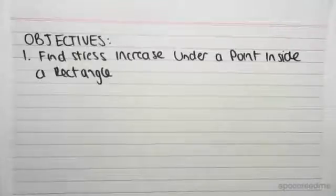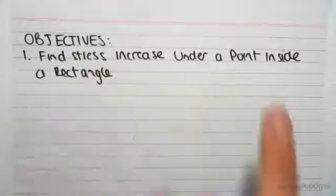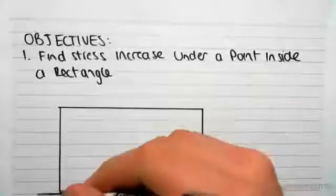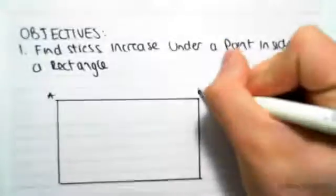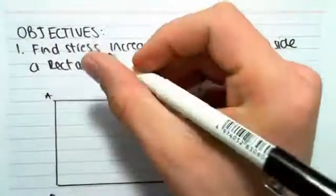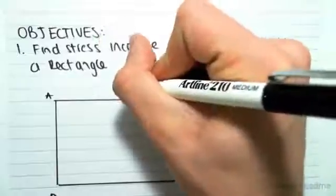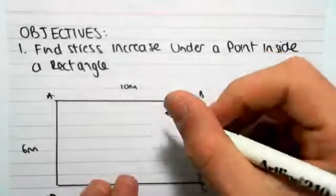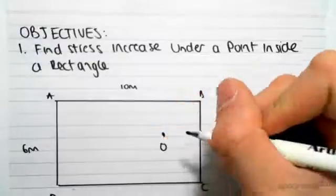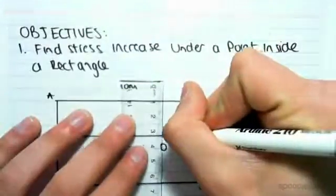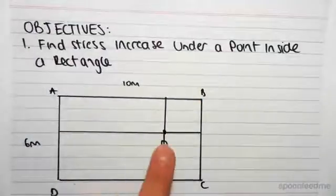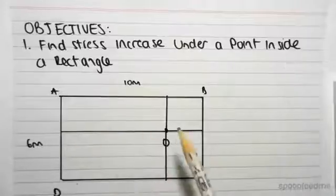The objective for this video is to find the vertical stress increase under a point inside a rectangle. If we make up a quick example, let's say we have a rectangle — this is a plan view looking down from a bird's eye — labeled A, B, C, D. Let's say the rectangle is 10 meters by 6 meters. We want to find the vertical stress increase at a point, so we'll subdivide the rectangle into shapes. Whenever we're doing this type of example, we're always concerned about the corners of the rectangle.